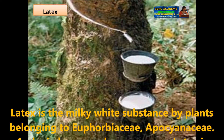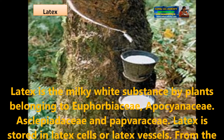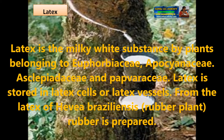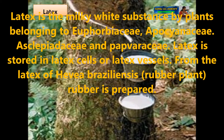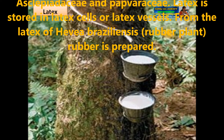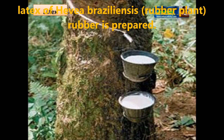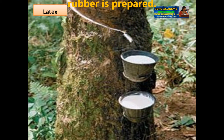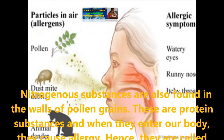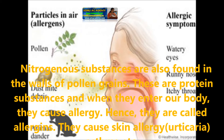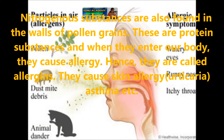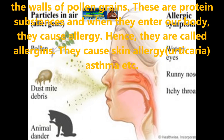Latex is the milky white substance secreted by plants belonging to Euphorbiaceae and Papaveraceae. The latex is stored in latex cells or latex vessels. From the latex of Hevea brasiliensis, rubber is obtained from the rubber plant. Nitrogenous substances are also formed in the walls of pollen grains. These are protein substances and when they enter our body they cause allergy, hence they are called allergens.